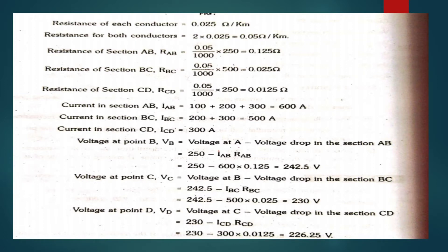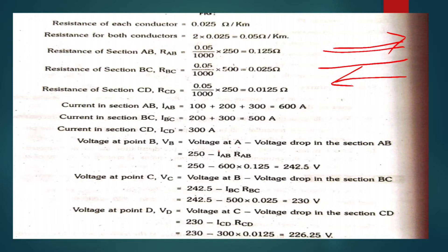Given data: resistance of each conductor is 0.025 ohms. For both conductors — the go path and return path — we consider both resistance values. So the total resistance for both conductors is 0.05 ohms per kilometer.